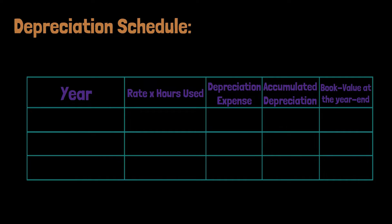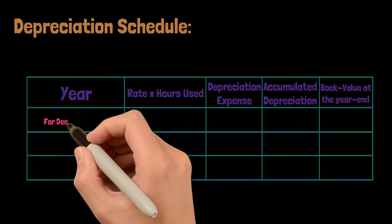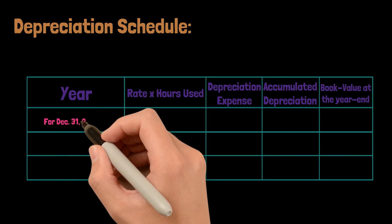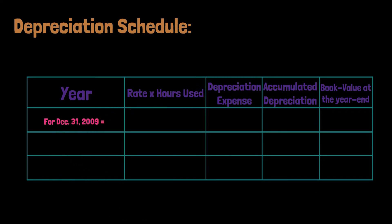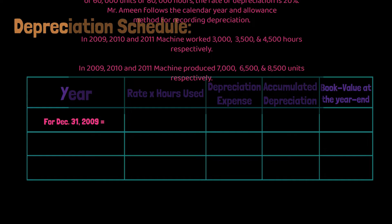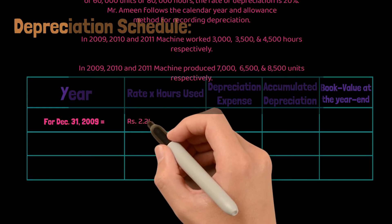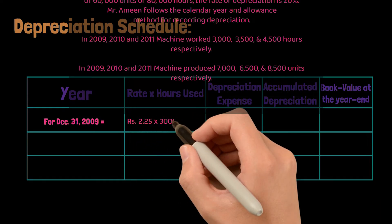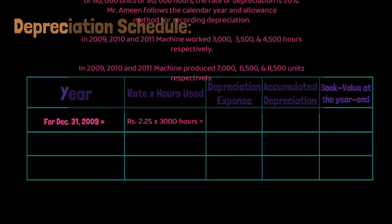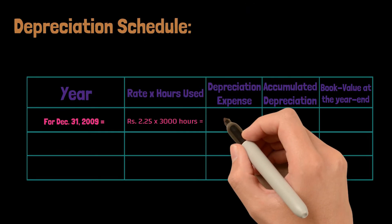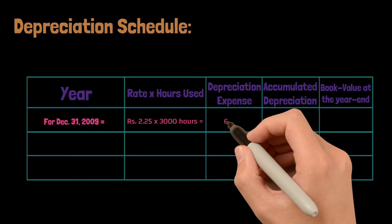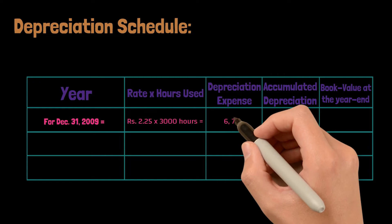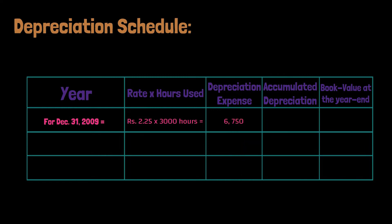For December 31st, 2009: the machine was used for 3,000 hours. We multiply 3,000 hours by Rs. 2.25 per hour. Our depreciation expense for 2009 is Rs. 6,750.